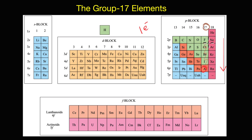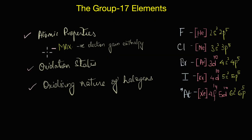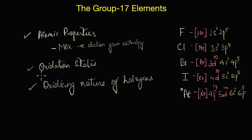For all our discussions, we'll mostly be talking about fluorine, chlorine, bromine, and iodine. In this video, we'll briefly look at the atomic properties of the Group 17 elements, especially their negative electron gain enthalpy. We'll also discuss their oxidation states and look at scenarios where halogens can exhibit positive oxidation states, and lastly we will look at the oxidizing power of halogens and see how it varies across the group.